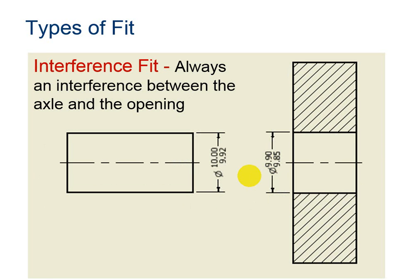In this case we have interference fit. The minimum size of the axle is 9.92 but the maximum size of the opening is 9.90. Therefore, if the parts are manufactured correctly the axle will always be larger than the opening. And this type of fit may be called a press fit or force fit such that the two parts must be pressed together in order to assemble them.